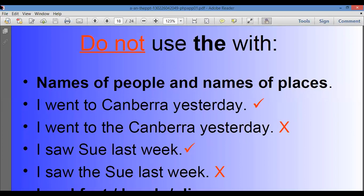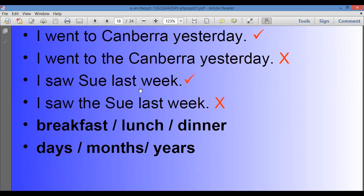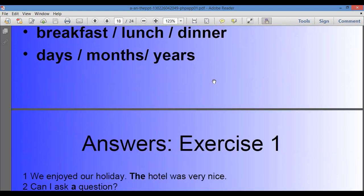I bought a sandwich. The sandwich was nice. Which sandwich here we are talking about? The one I bought. But the milkshake was horrible. Which milkshake was horrible? The one that I got was horrible. Do not use the with names of people and the names of places. I went to Sanberia yesterday. Not I went to the Sanberia yesterday. We cannot use the with the name of a person or a place. Breakfast, lunch, dinner, days, month, years. These are also that we cannot use with them. The.